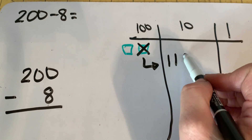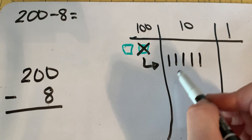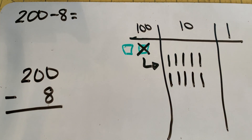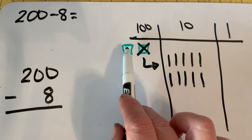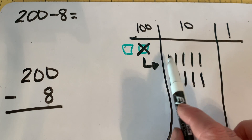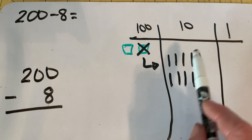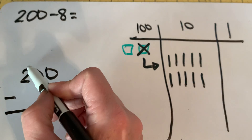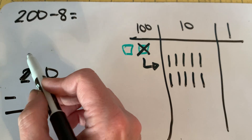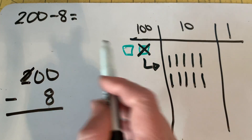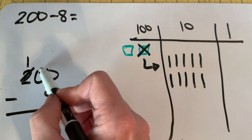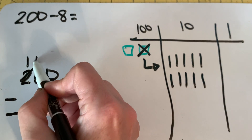There are 10 tens when we decompose that hundred. Let's check to make sure we still have 200 because we haven't subtracted anything yet: 100, 110, 120, 130, 140, 150, 160, 170, 180, 190, 200. All that we did was decompose one of those hundreds, which left us with 100. So now instead of having zero tens, we have 10 tens. And now we can look at getting those ones — we've got a ten to decompose.